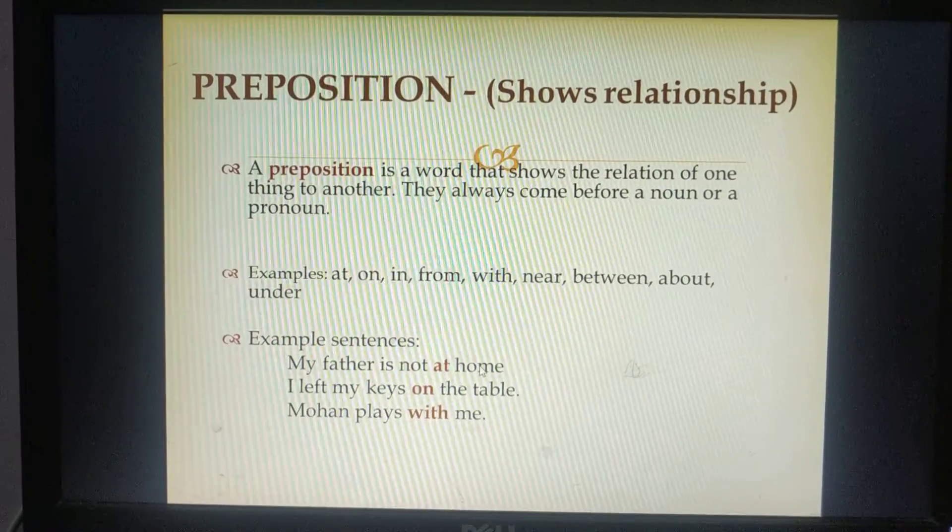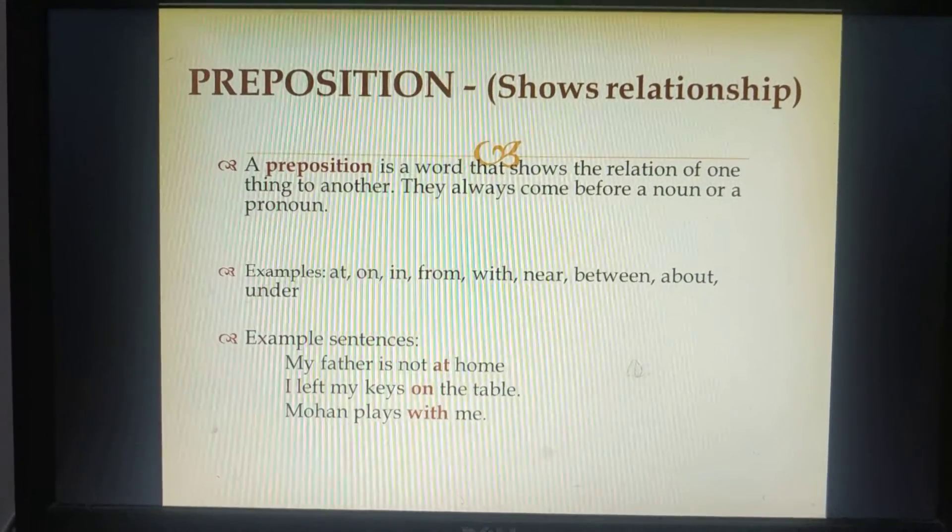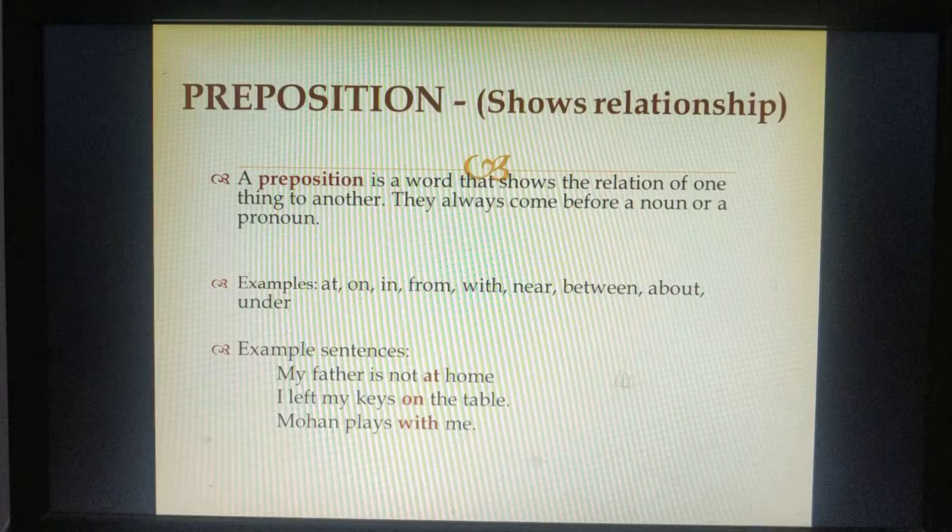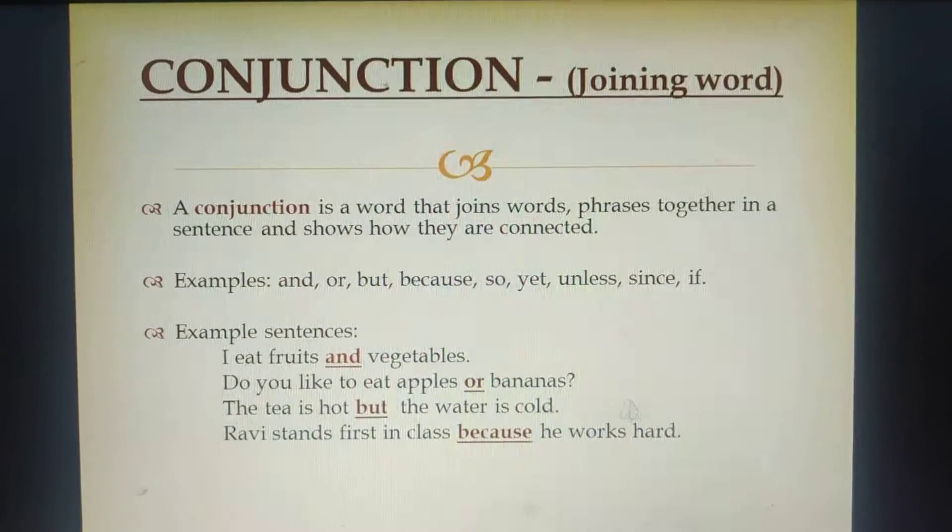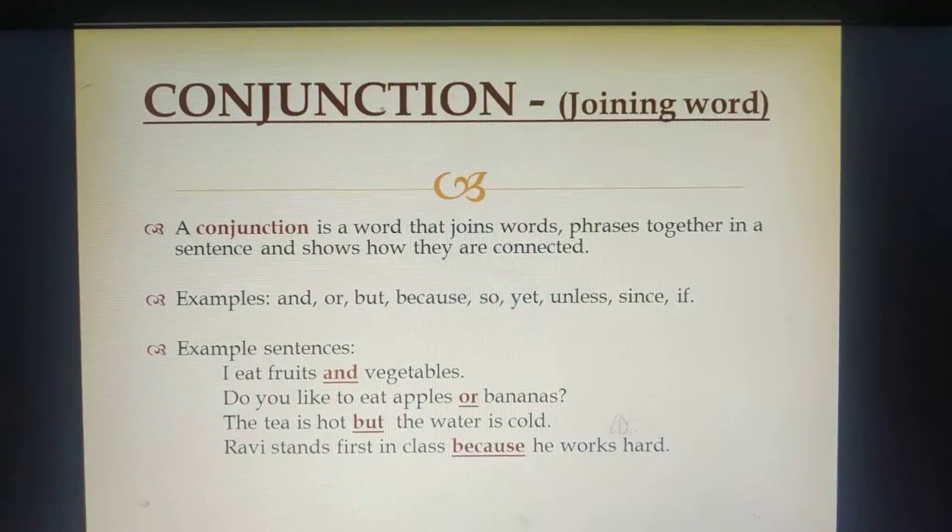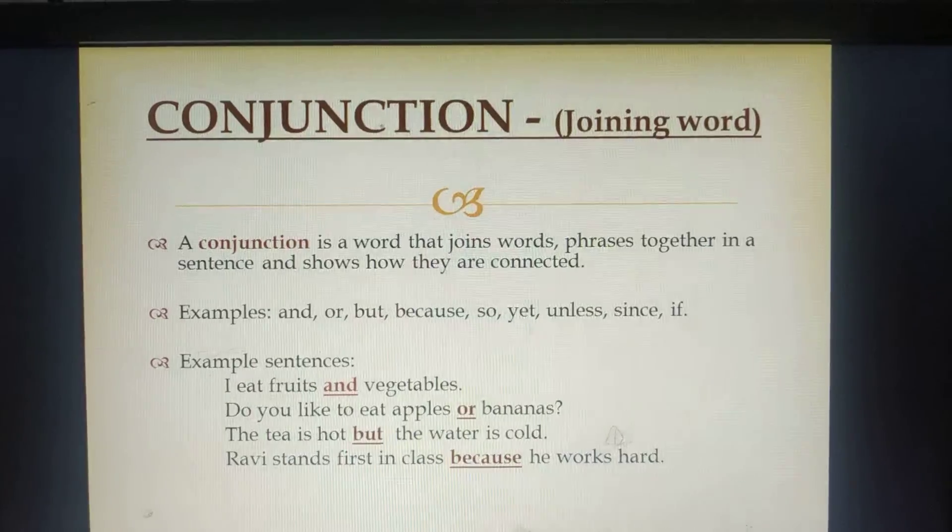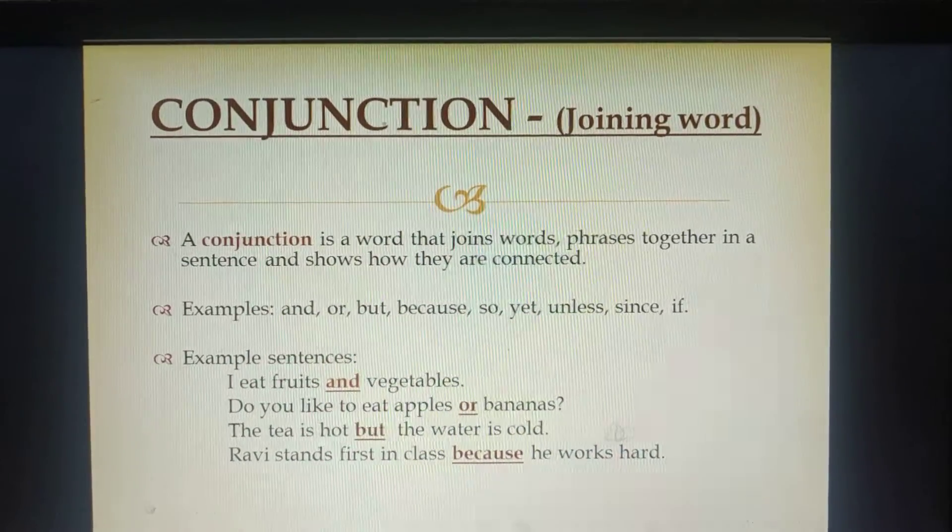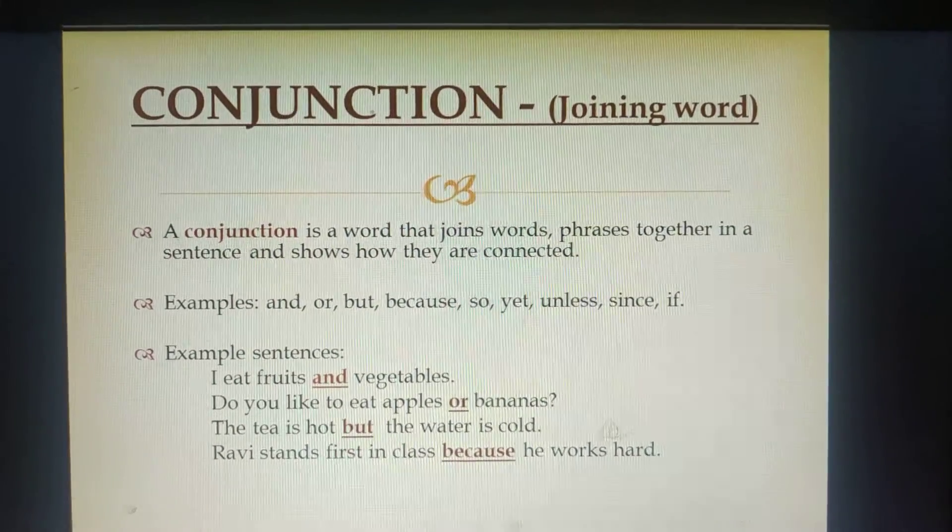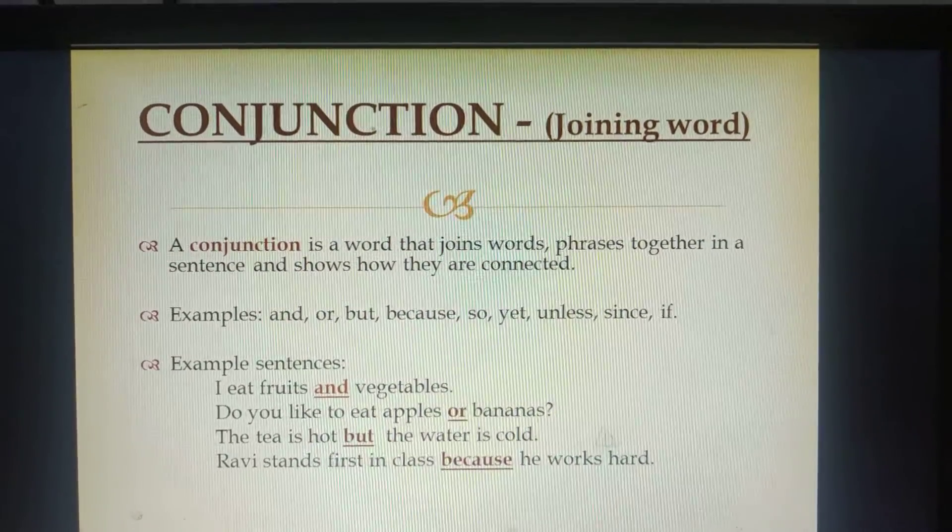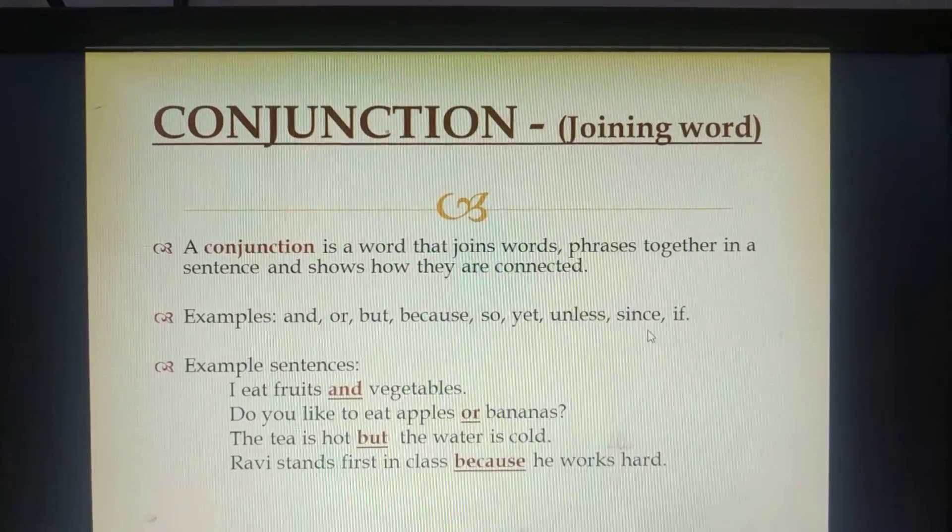Now we'll read the next part of speech that is conjunction. A conjunction is a word that joins words, phrases together in a sentence and shows how they are connected. For example, and, or, but, because, so, yet, unless, since, if.